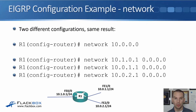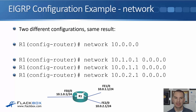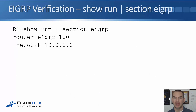One more variation: we could also use host-specific wildcard masks. For example, 'network 10.1.0.1 0.0.0.0' matches an interface with exactly 10.1.0.1 using a /32 wildcard. Similarly, 'network 10.0.1.1 0.0.0.0' and 'network 10.0.2.1 0.0.0.0' match each specific interface exactly. In all cases, the networks advertised are still /24, because that is what is configured on the interface — not the /32 used in the network command. There are multiple valid ways to achieve the same result with the network command.